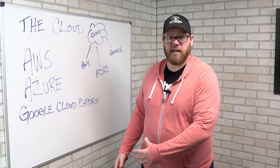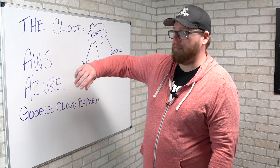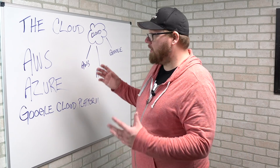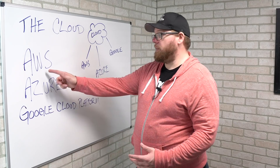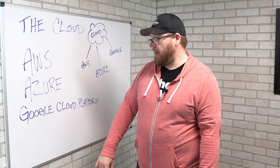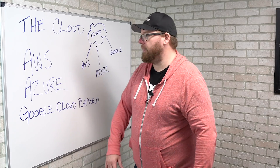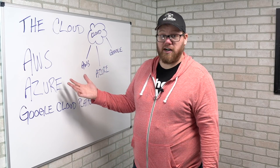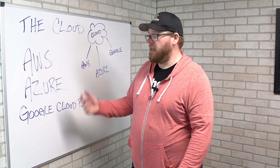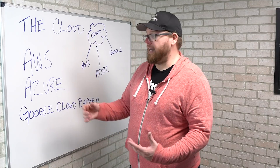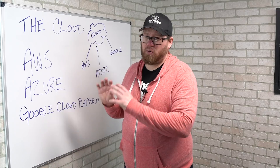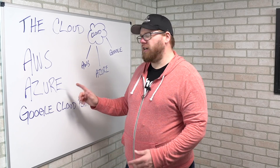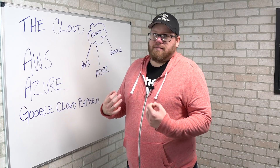Today we're actually talking about AWS, Azure, and Google Cloud Platform. AWS is Amazon, Azure is Microsoft, and then there's Google — that's the obvious one. These are all cloud platforms where you can essentially host your entire infrastructure and applications. They each offer many different features, but they're all pretty much the same in regards to what you're able to do with them.